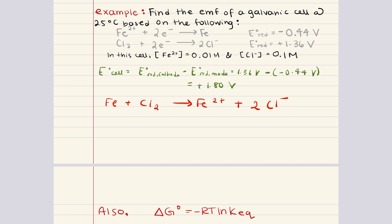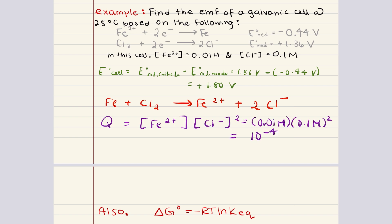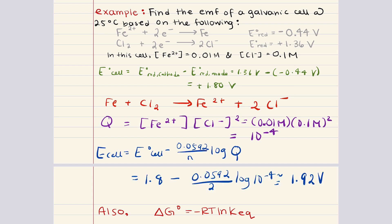From the net ionic equation we can determine the reaction quotient Q. Q equals the concentration of iron 2+ multiplied by the concentration of chloride ions squared — that is its stoichiometric coefficient — so we multiply 0.01 molar by 0.1 squared molar, which gives us 10 to the minus 4. We plug into the Nernst equation with n equals 2 and temperature at 25 degrees Celsius (298 Kelvin), using the simplified form: 1.8 minus 0.0592 divided by 2, times the log of 10 to the minus 4. This gives us a total of 1.92 volts.